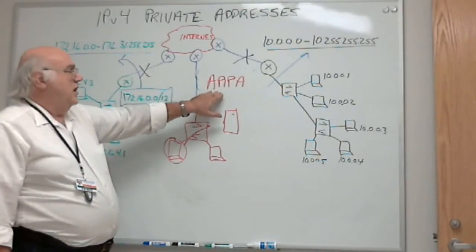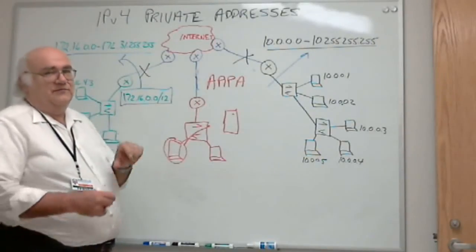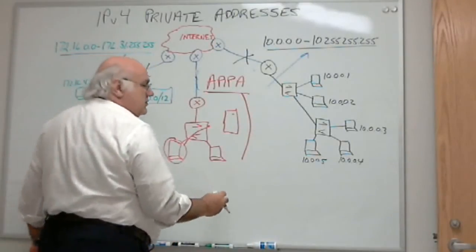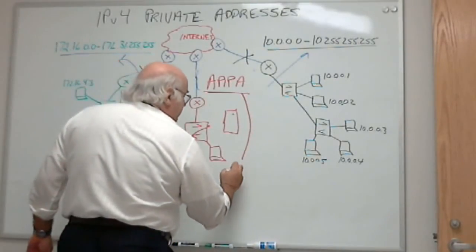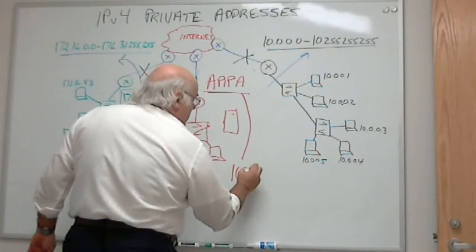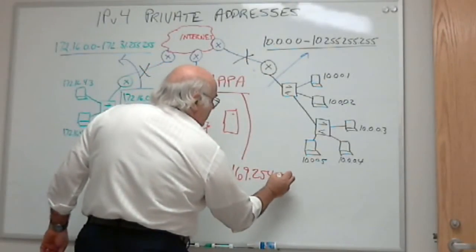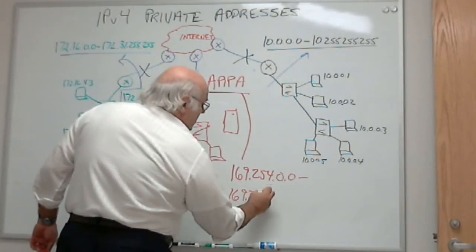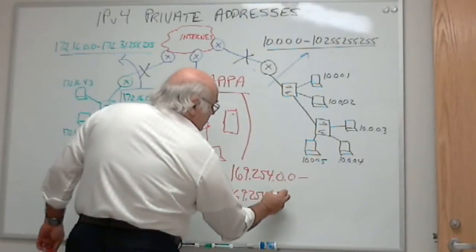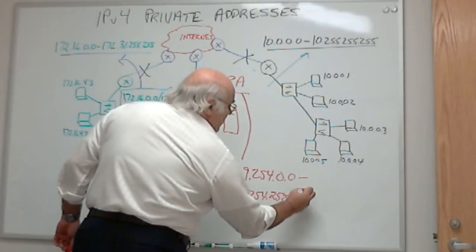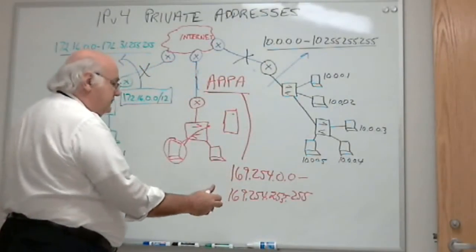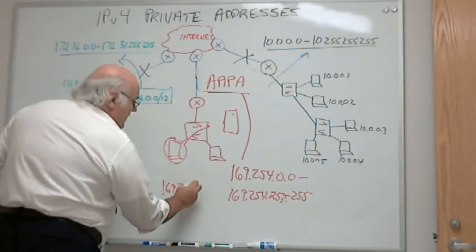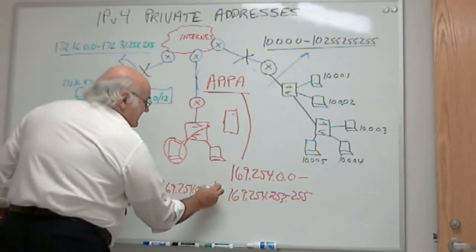APIPA stands for Automatic Private IP Addressing. Again, Automatic Private IP Addressing. Windows uses this facility to give an address to anybody coming up that can't get an address. He gives them an address from this group, 169.254.0.0 through 169.254.255.255. Or if we just want to use the network designation, 169.254.0.0 slash 16.